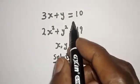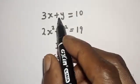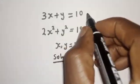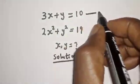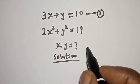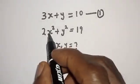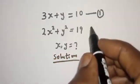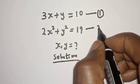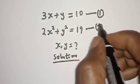We have 3x plus y is equal to 10 — let's call this equation 1. Then 2x squared plus y squared is equal to 19 — let's call this equation 2.